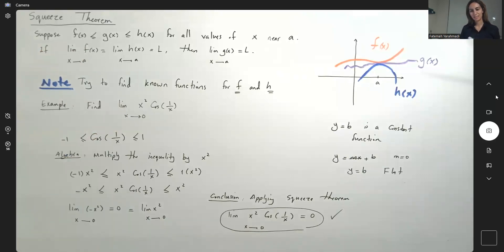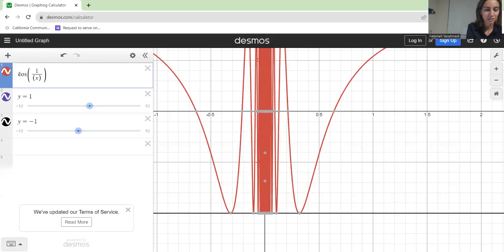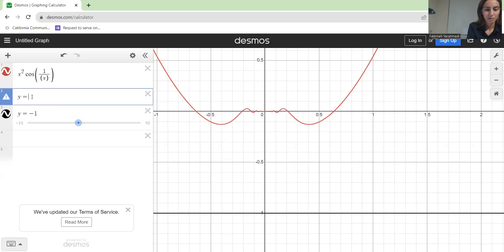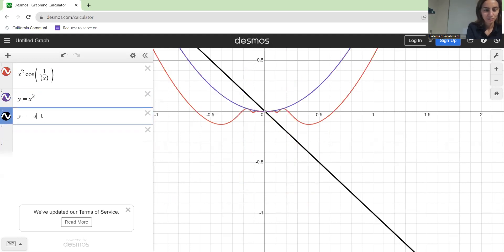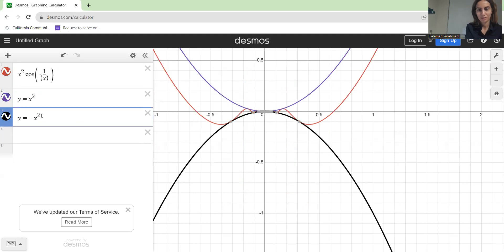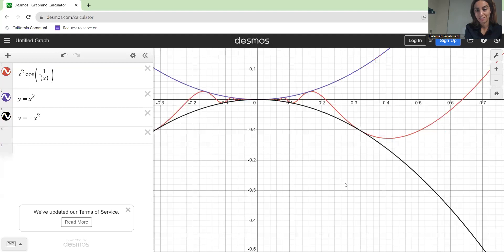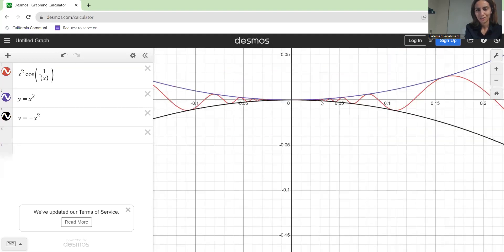So you can take a look at this more and actually see this visually. Here I have x squared multiplied by cosine of 1 over x and the upper bound was x squared itself, a quadratic function, and the lower bound is negative x squared, another quadratic function.